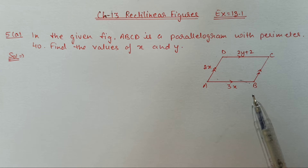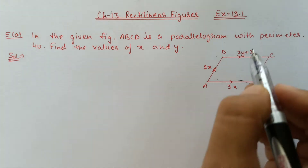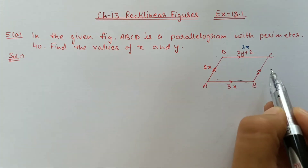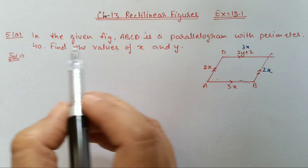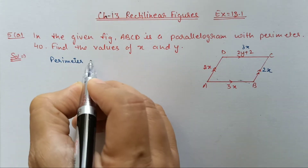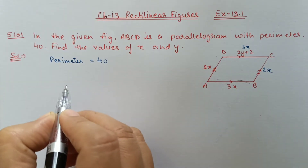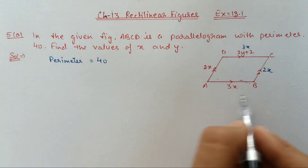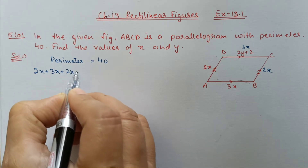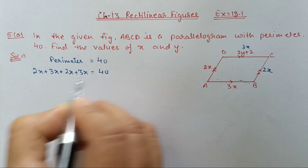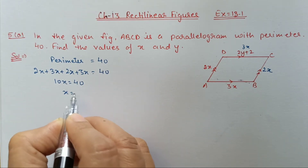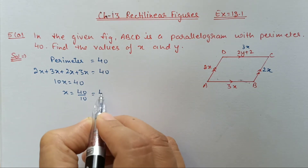In a parallelogram, opposite sides are equal. So if one side is 3X, the opposite side is also 3X. If one side is 2X, the opposite side is also 2X. Starting with the perimeter: perimeter is 40, and perimeter means sum of all four sides. So 2X plus 3X plus 2X plus 3X equals 40, giving us 10X equals 40, so X equals 4.